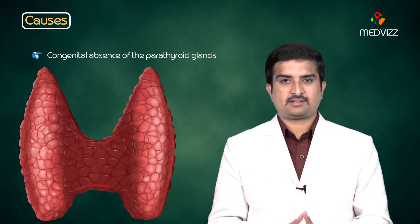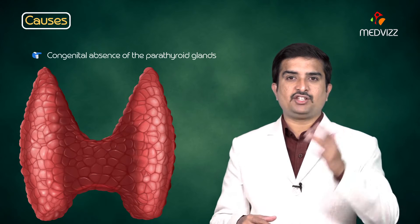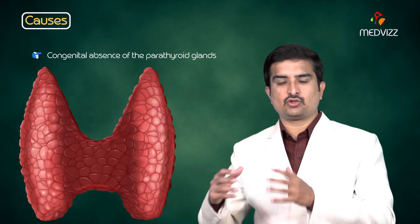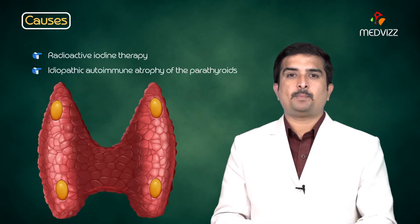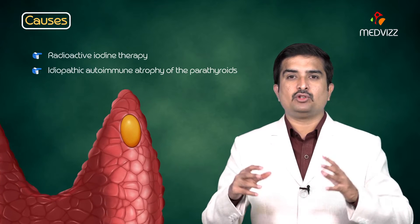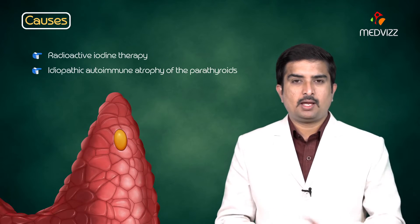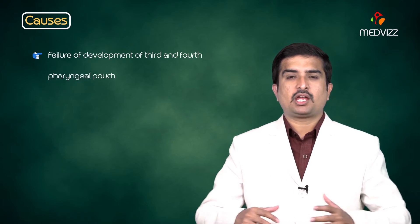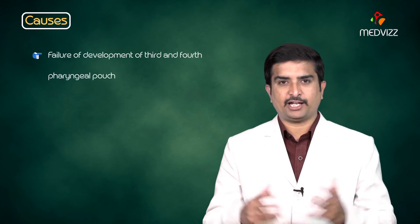Congenital absence is seen especially in DiGeorge syndrome, particularly in infants and children. Radioactive iodine therapy or idiopathic autoimmune atrophy of the parathyroids may also cause this condition. Additionally, failure of development of the third and fourth pharyngeal pouches can lead to hypoparathyroidism.